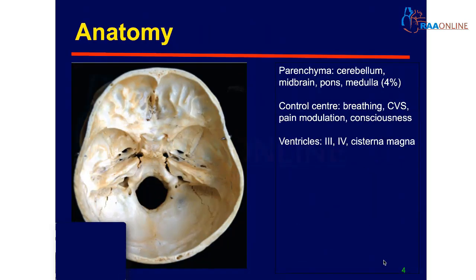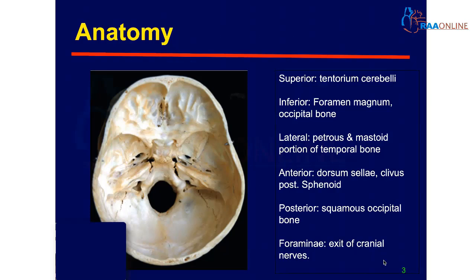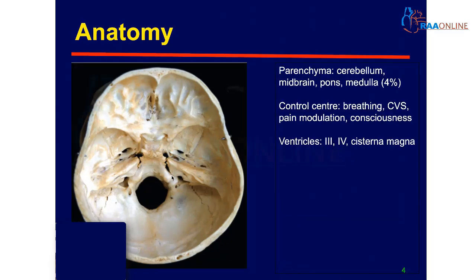Now let's go back to the anatomy. What is the posterior cranial fossa? The skull base is divided into three aspects: anterior, middle, and the posterior cranial fossa. Superiorly the boundary is formed by the tentorium cerebelli, inferiorly by the foramen magnum and the occipital bone, laterally by the petrous bone and the mastoid portion of the temporal bone, and anteriorly by the dorsum sellae, clivus and posterior aspect of the sphenoid. Posteriorly it is formed by the squamous portion of the occipital bone, and it has many foramina for the exit of the cranial nerves.